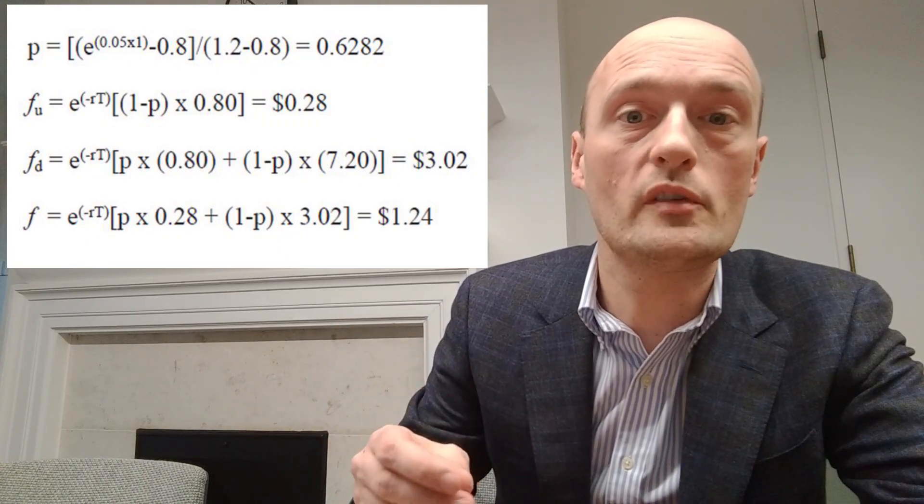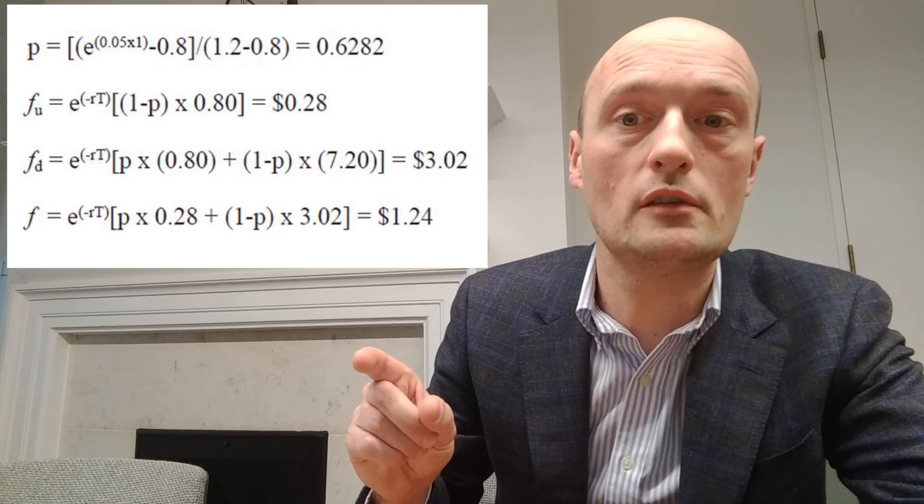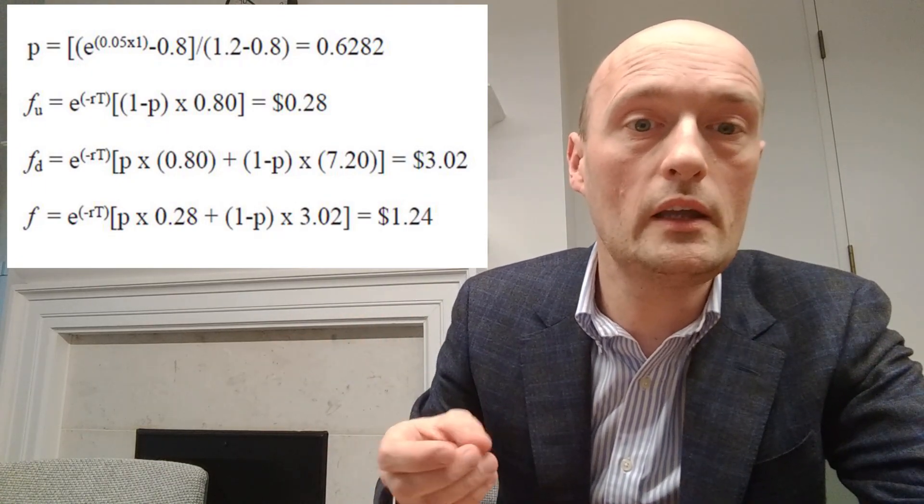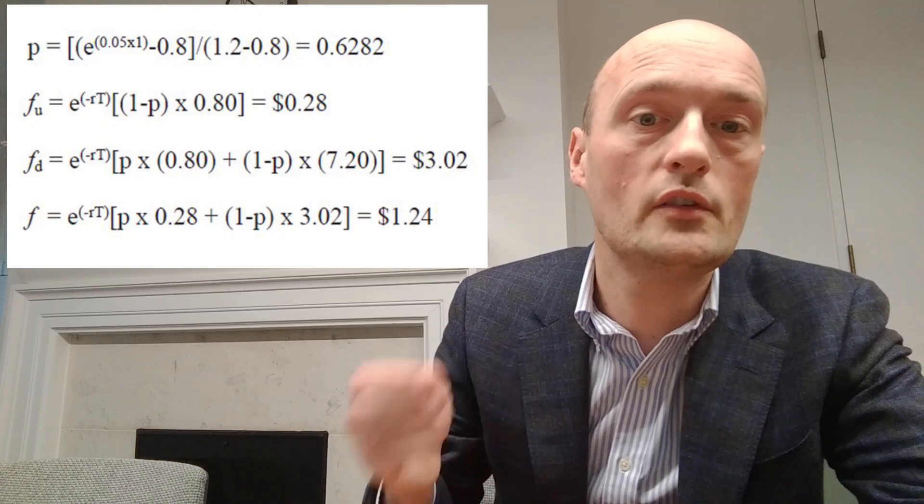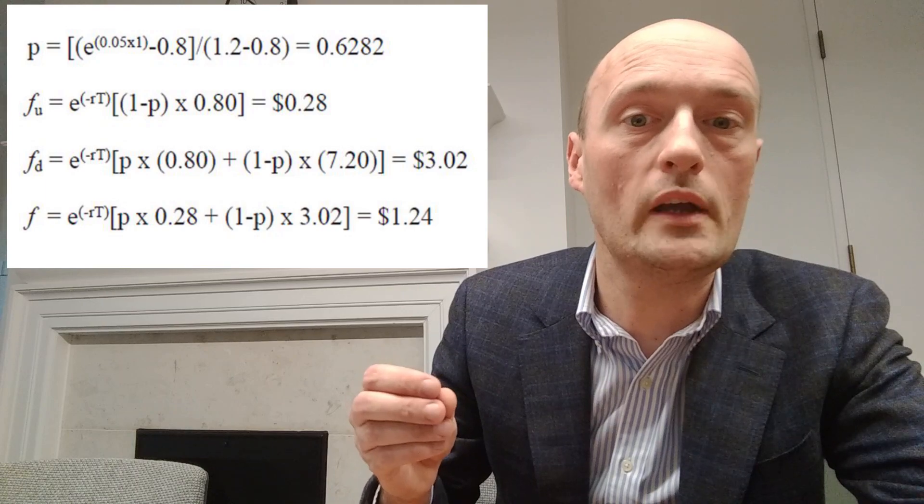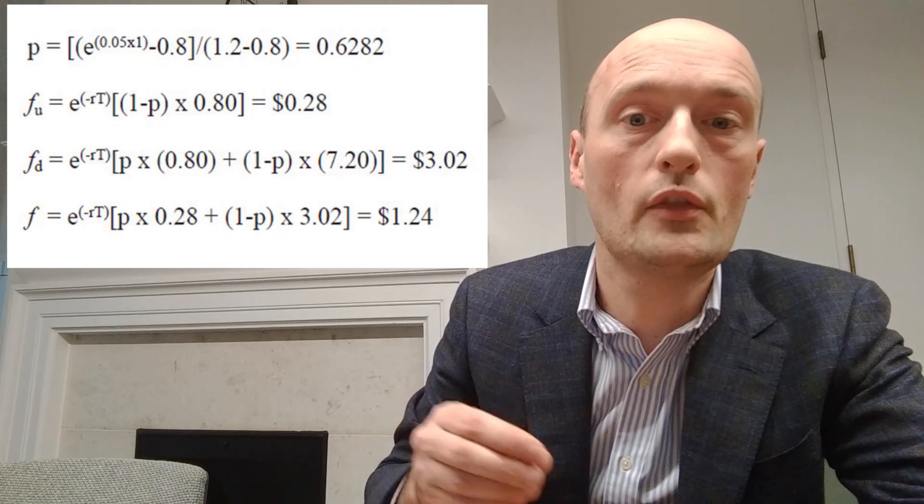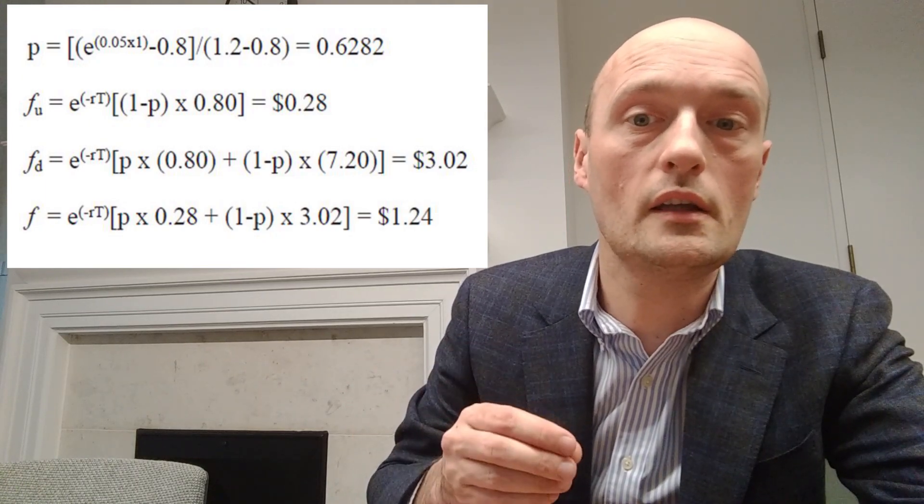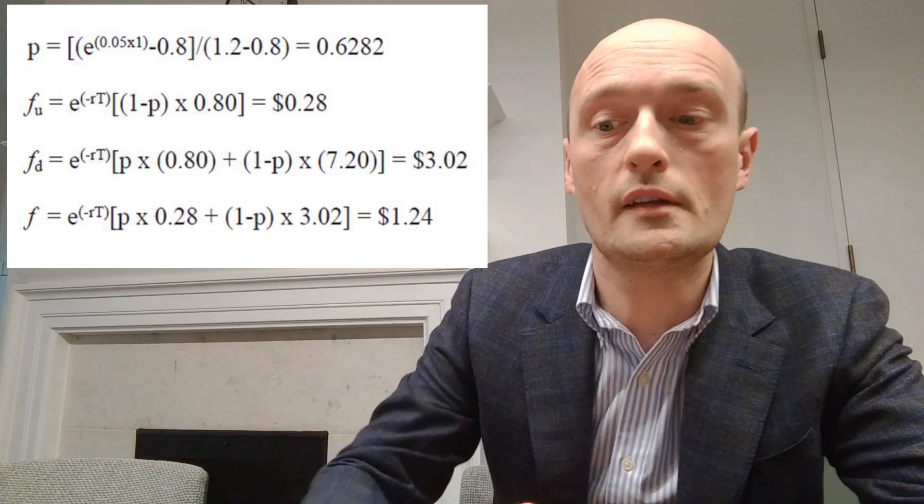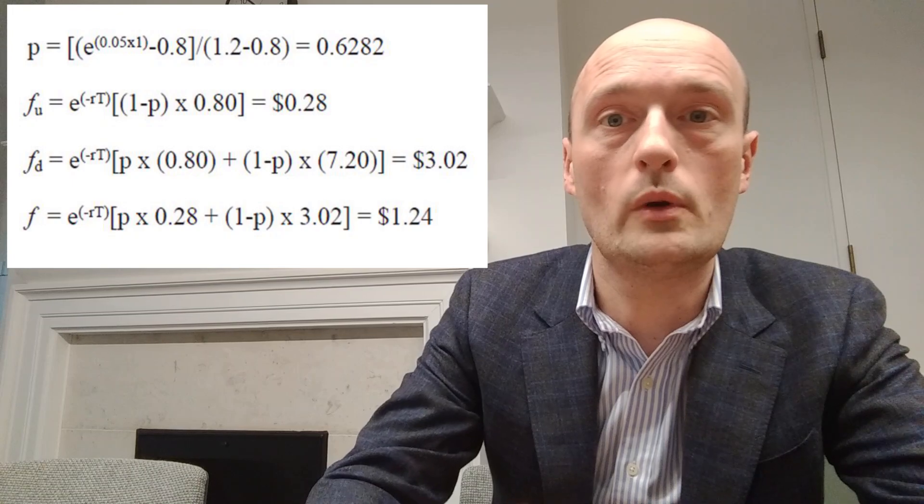So then we just plug our $0.28 and our $3.02 into the formula and do the calculation again. So P, 0.6282 times $0.28 plus 1 minus 0.6282 multiplied by $3.02 gives us $1.24. So our put in this example is worth $1.24.